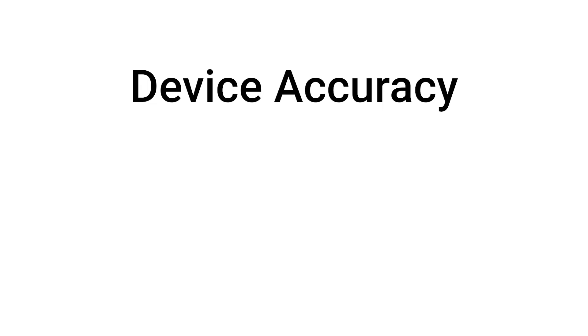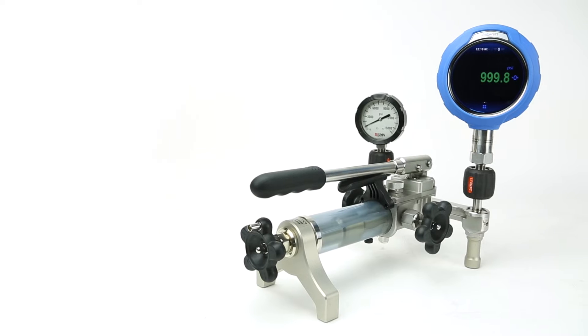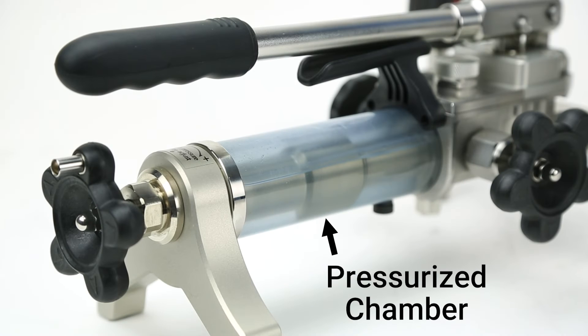The accuracy of a device is defined as the closeness between the measured value from that device and the true value being generated. Since the true value of what is being measured exists with or without a device measuring it, for example the pressure within a pump, accuracy is better understood as a concept rather than a value.